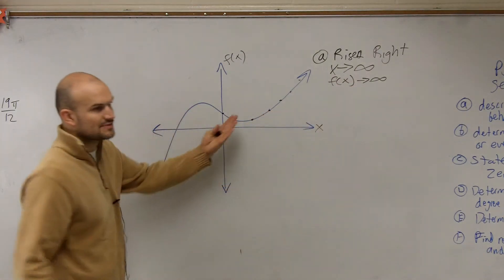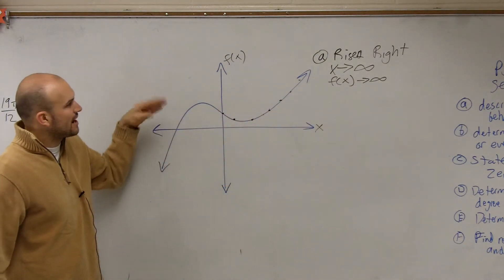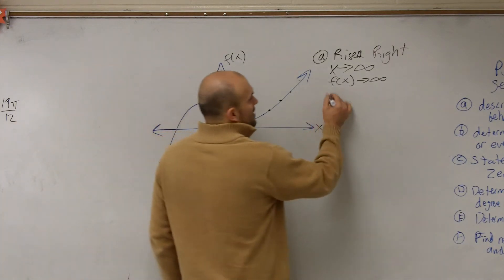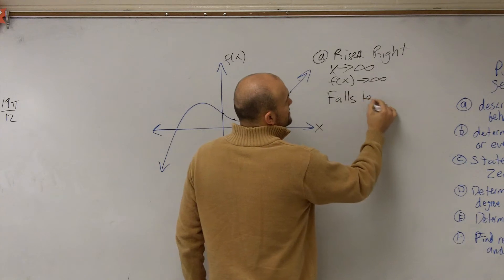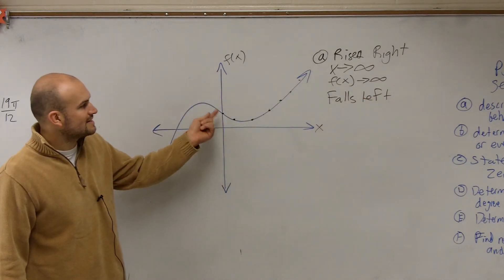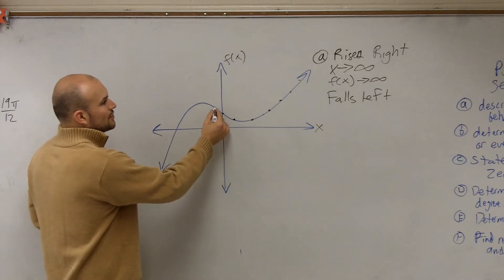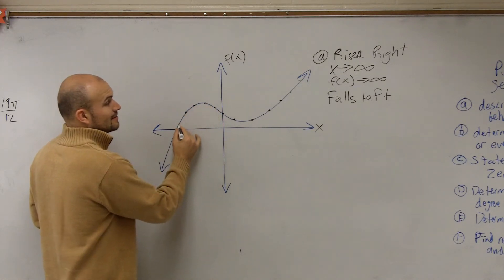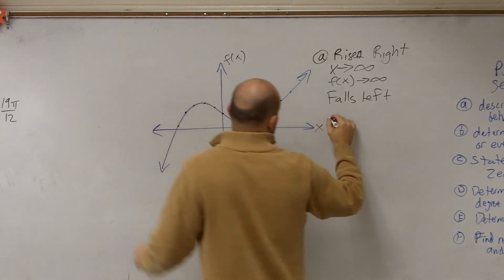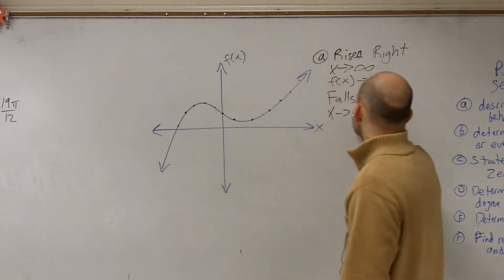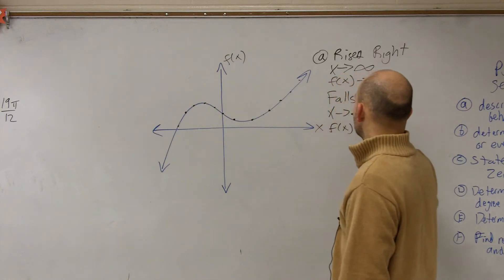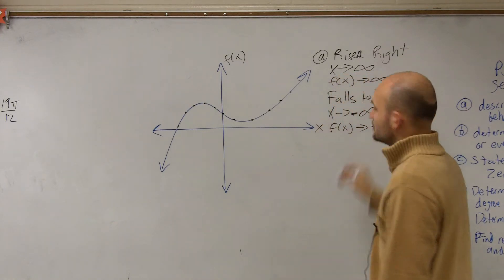Then we look at: as we go to the left, we could say that my graph falls — it's now going down. So we could say the graph falls left. Or you could say, as my x coordinates go to the left, my f(x) coordinates go towards negative infinity. So we could say: as x approaches negative infinity, f(x) approaches negative infinity.